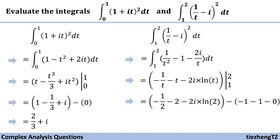Next we substitute using two and one individually and do the simple math. The final result is: -1/t evaluated gives -1/2, and then minus 2i·ln(2). That's it.